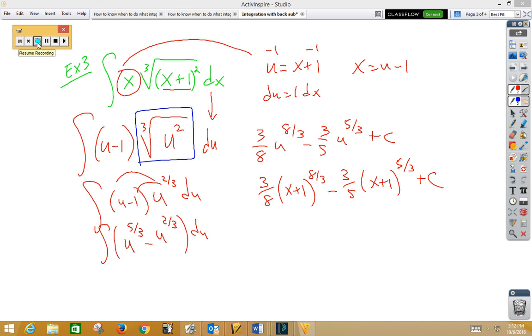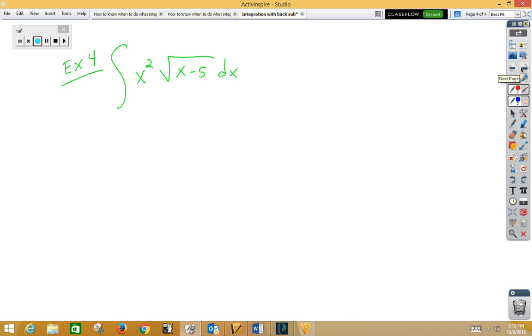One more example. So here, again, we're doing our standard u sub. u is the inside function, x minus 5. du once again is dx, so dx becomes du. This piece becomes root u, but now our x is being squared.